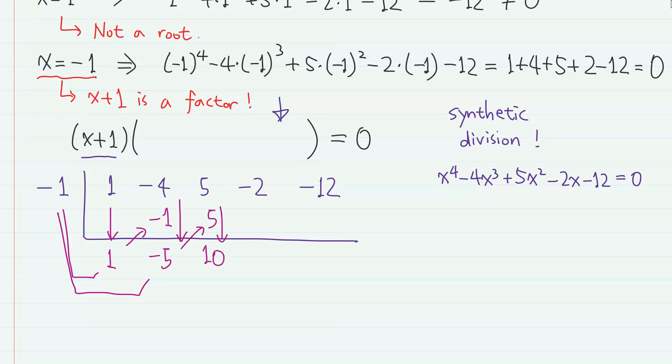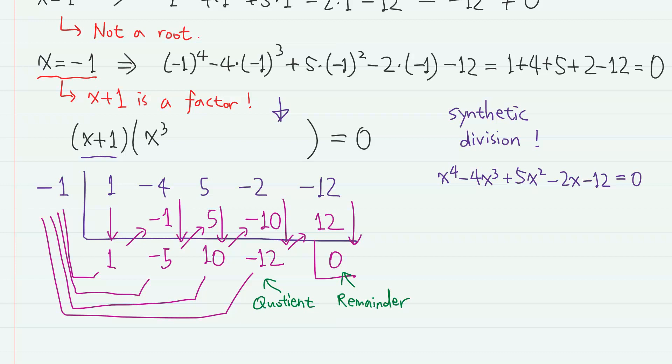And minus 1 times 10 gives minus 10. So if we add them up, we have minus 12. And minus 1 times minus 12 gives 12. So if we add, we obtain 0. So the quotient is x cubed minus 5x squared plus 10x minus 12. And the remainder is 0, as it should be.